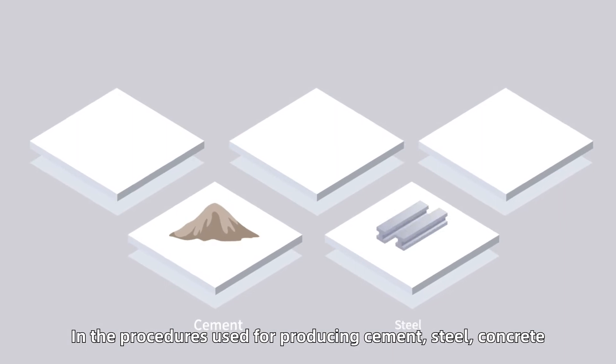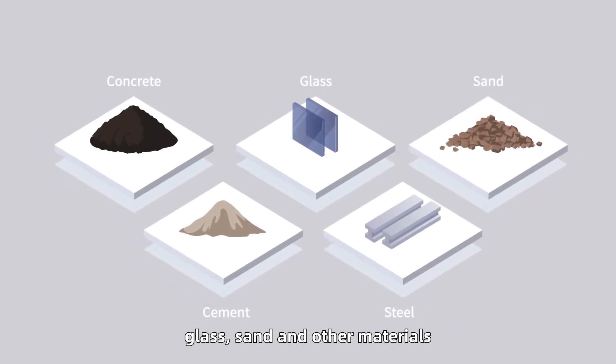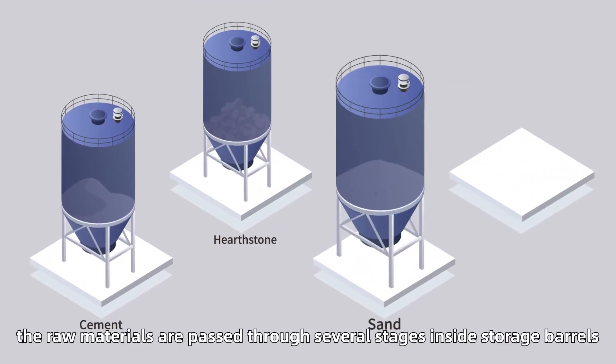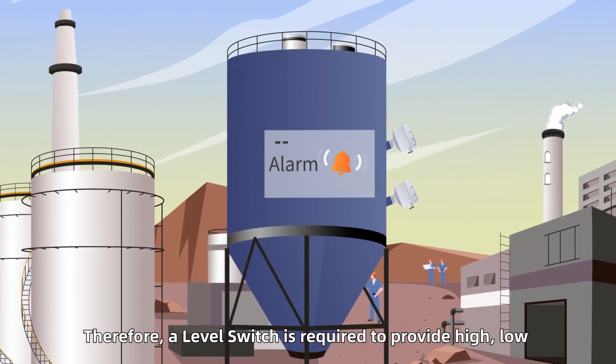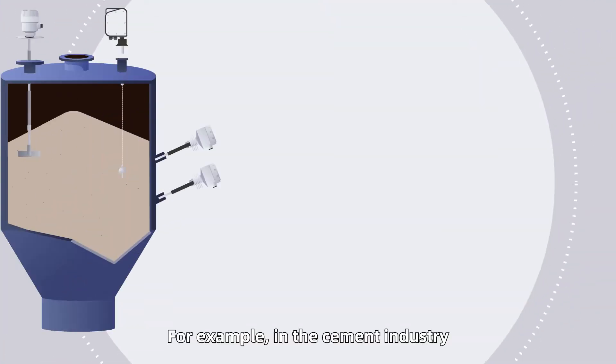In the procedures used for producing cement, steel, concrete, glass, sand and other materials, the raw materials are passed through several stages inside storage barrels. Therefore, a level switch is required to provide high, low and continuous level monitoring.